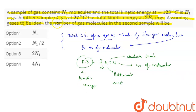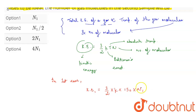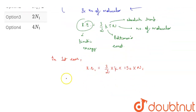Now let's take cases. In the first case, kinetic energy 1 equals (3/2) × k × 150 × N1, where N1 is the number of molecules of gas sample 1 and 150 K is the temperature of gas sample 1.